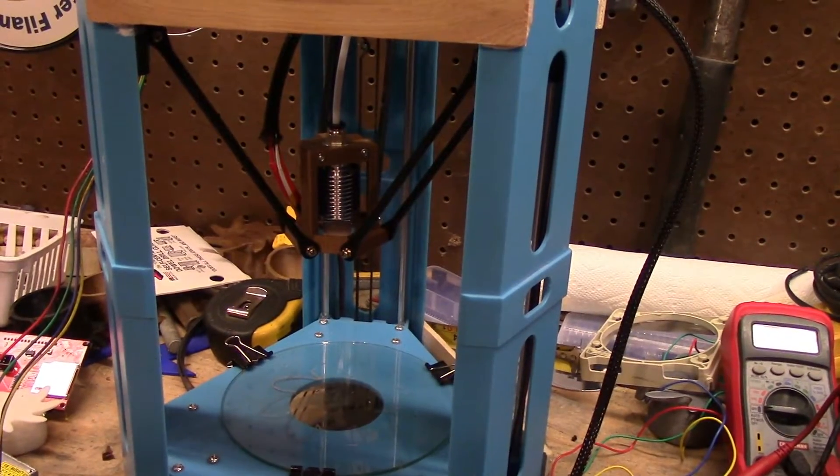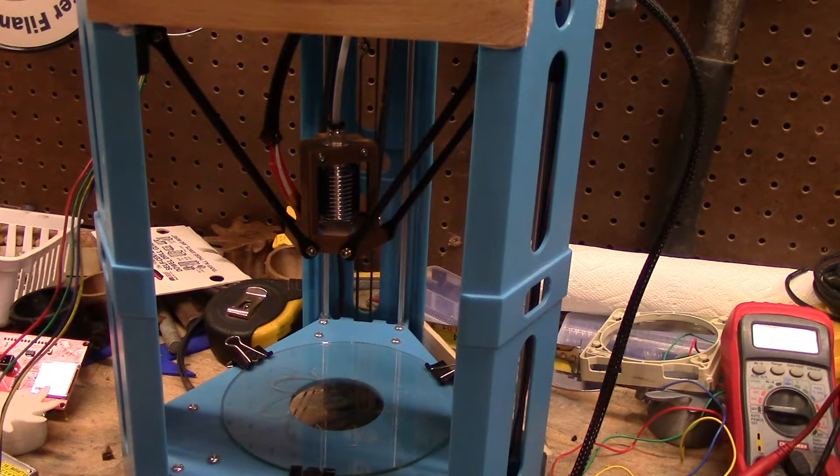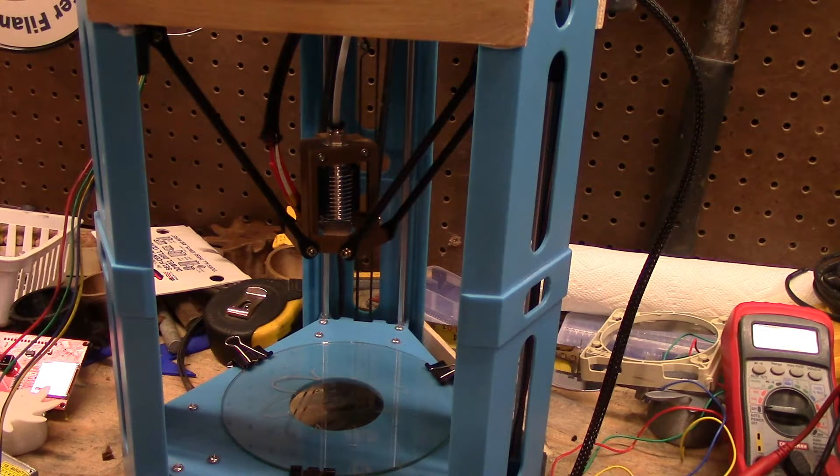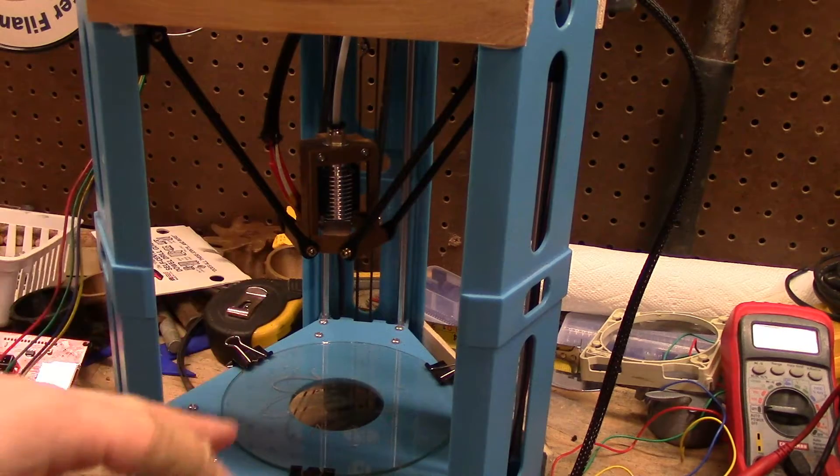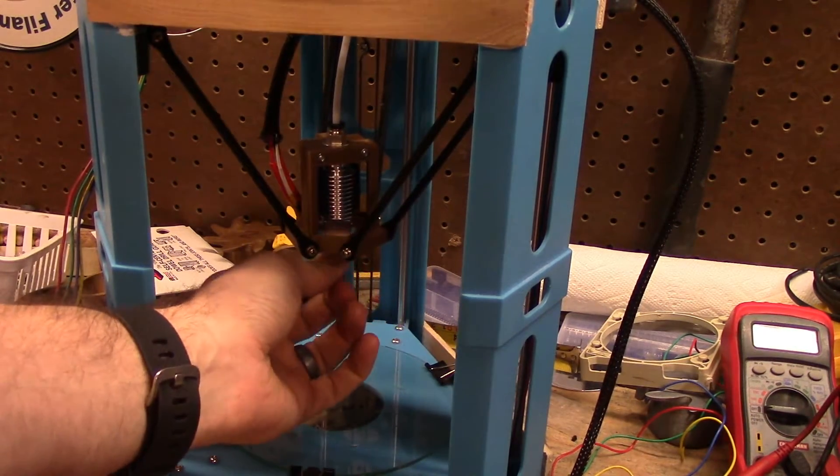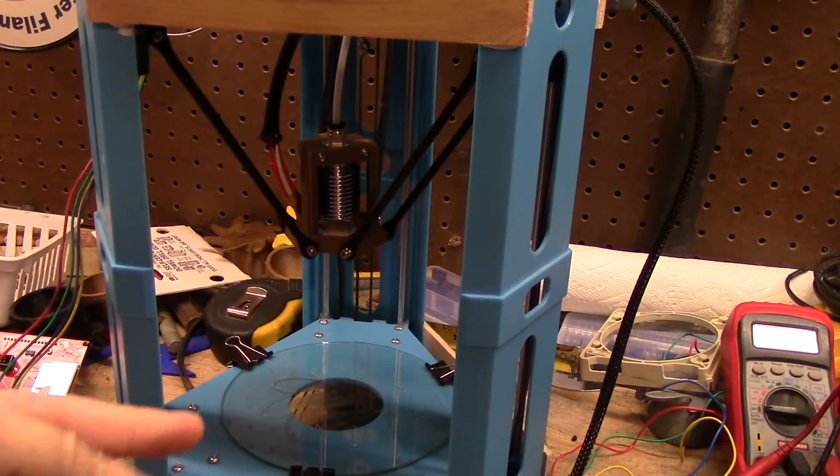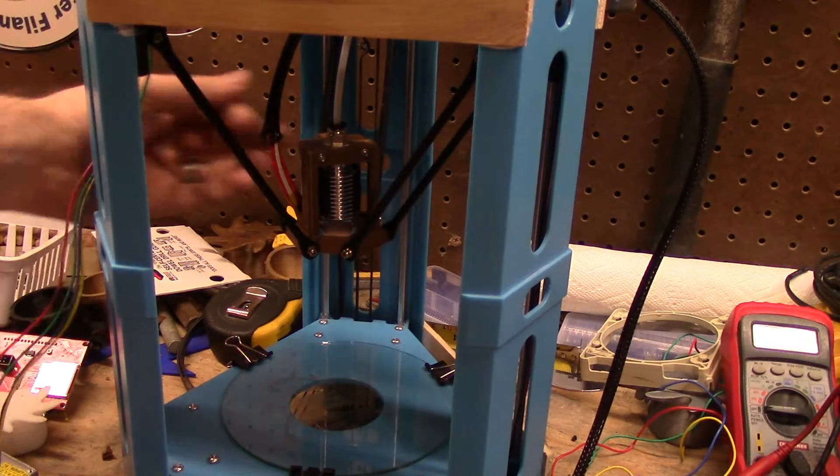I've got a $5 hotend down here. It's an E3D clone, an E3D v6 lite clone. It's got the early v6 block heat block on it without the thermistor cartridge, just a normal thermistor.